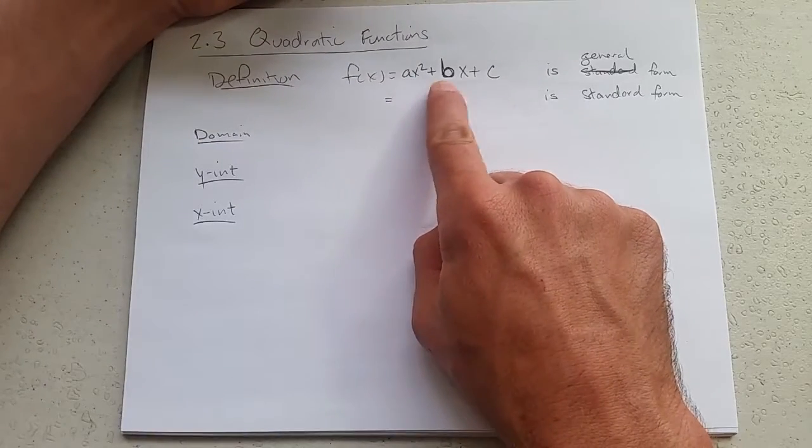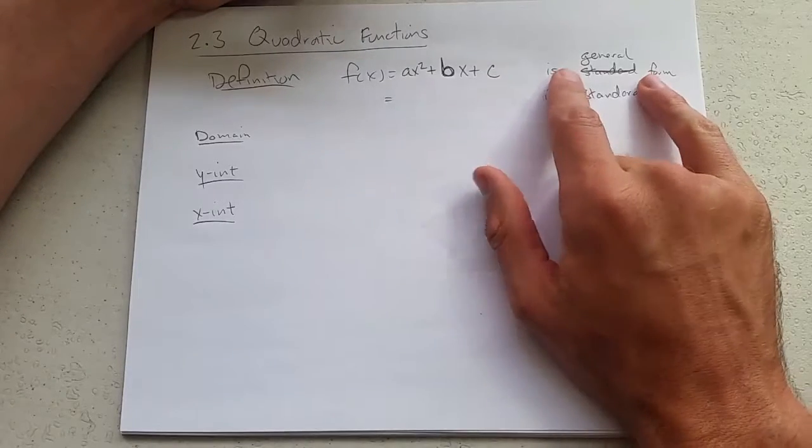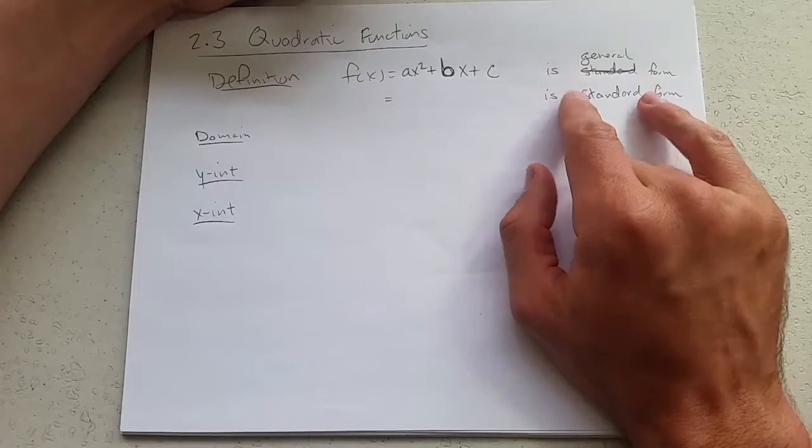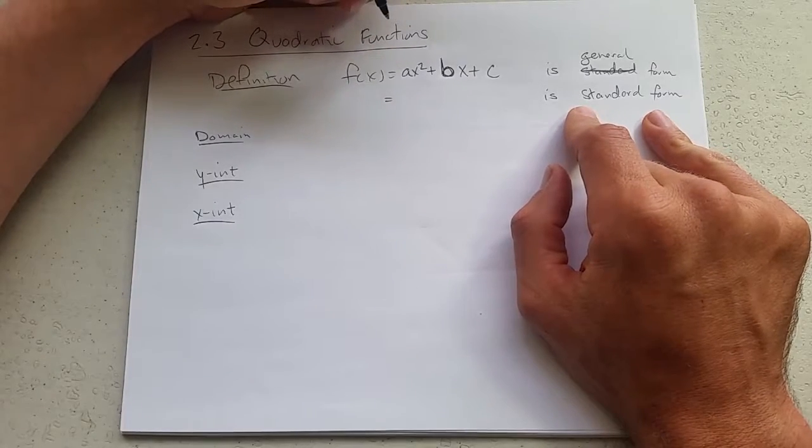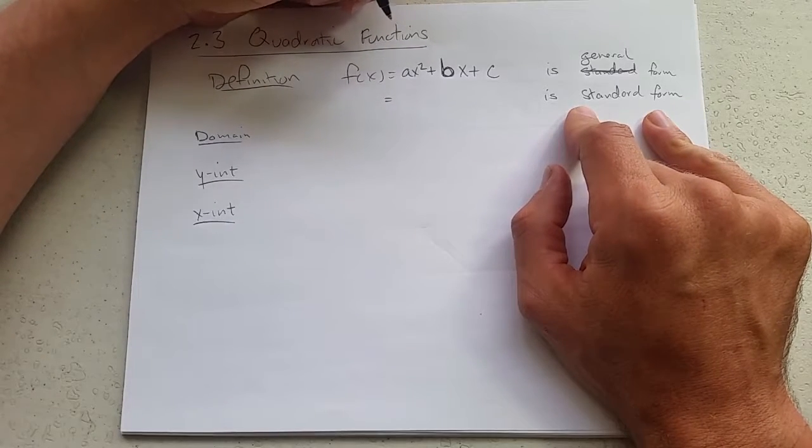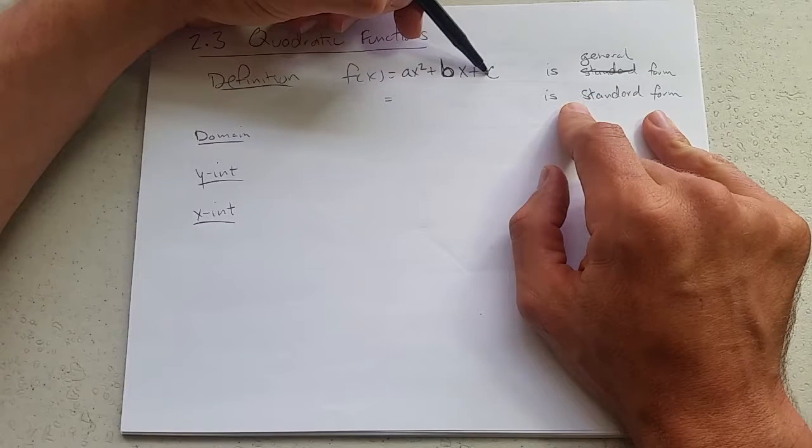Quadratic looks like ax squared plus bx plus c. We call this general form. There's also standard form, which is more useful for most things, but there are some things that general form is much better for, and that would be y-intercept is really good for general form.